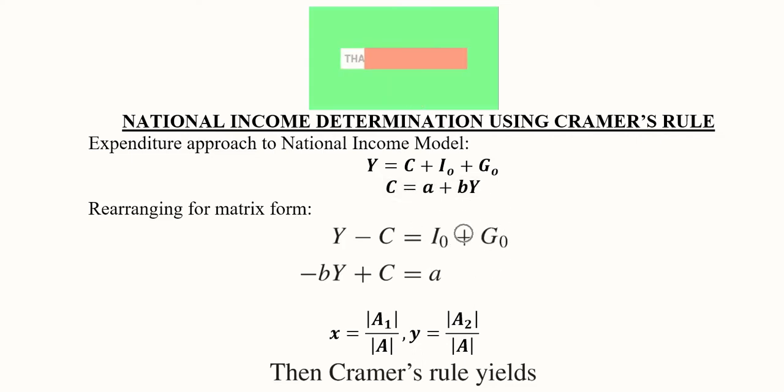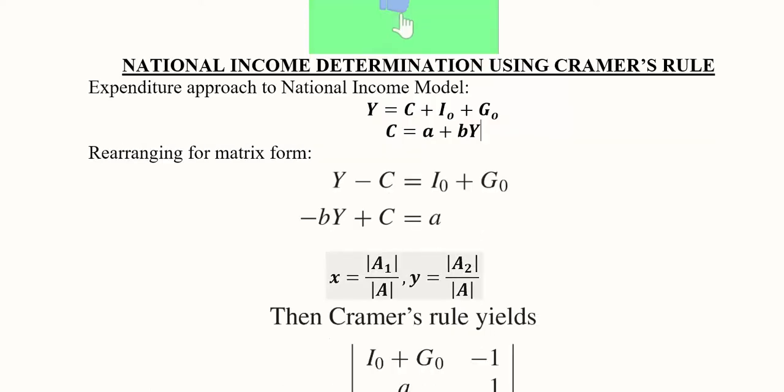This is Cramer's rule: the first unknown can be found by replacing the first column with the constant matrix and taking its determinant, dividing it with the original determinant. Similar holds for the second unknown—the second column is replaced with the constants matrix.